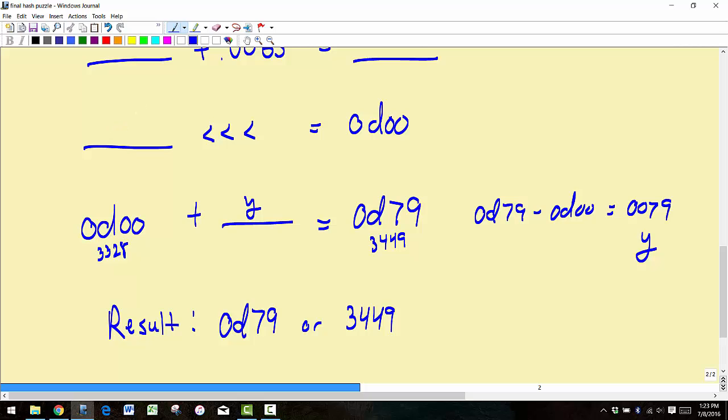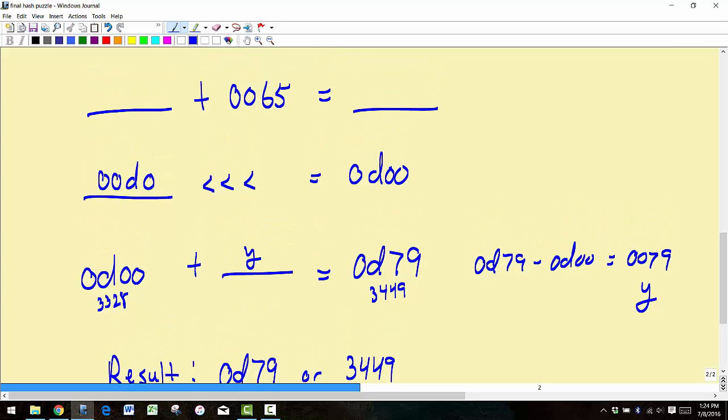Now to go from this step here to this step we did a left shift, so we're just going to shift this guy here back to the right. So we're going to get 00d0. And once we've got that, of course we know that that goes here, 00d0. And now we can just simply...